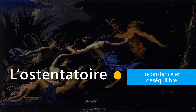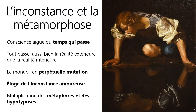Le deuxième principe mis en place dans les œuvres baroques est l'ostentatoire. Il s'agit de créer des œuvres spectaculaires pour bouleverser le public. Cette dimension spectaculaire met en valeur les idées d'inconstance et de déséquilibre. Le monde baroque est un monde instable. Pour les artistes baroques, le monde est soumis au devenir perpétuel. Tout ce qui naît est destiné à se transformer et à mourir. Le monde baroque est en mutation permanente.